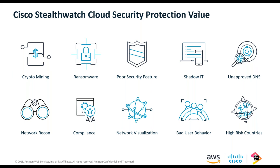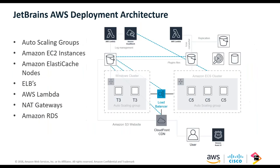Other StealthWatch Cloud use cases include reconnaissance and compliance. Along the kill chain, we do a good job alerting on suspicious activity as a threat evolves and moves through an AWS environment — whether it's a compromised EC2 instance, a compromised user account, or a user logging in from a suspicious geographic location. These are all things StealthWatch Cloud can automatically surface.